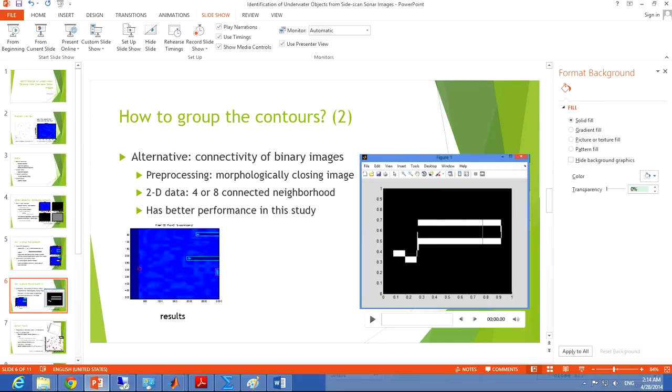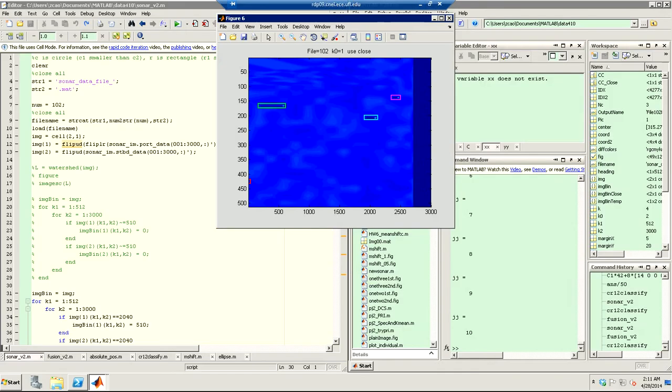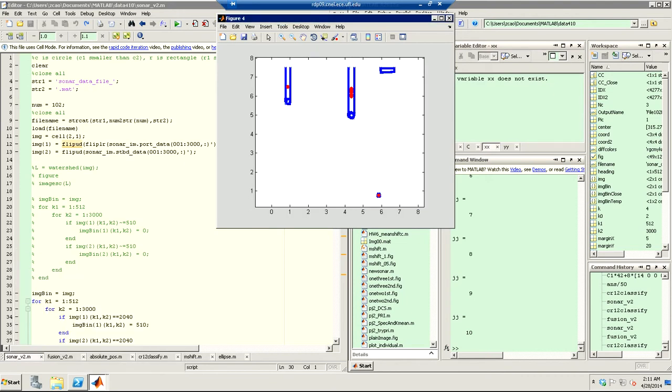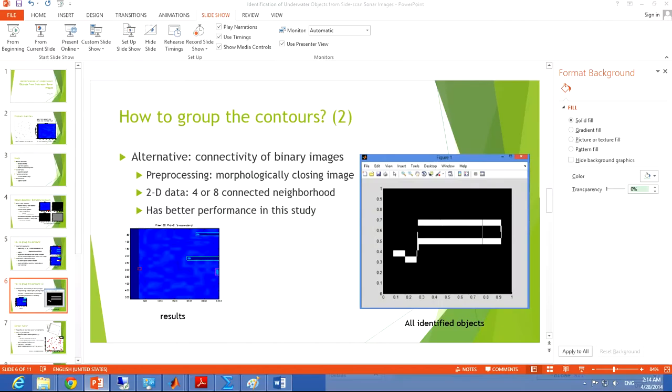One pre-processing necessary here is to morphologically close the image. Because some contours are not strictly connected. Like this one. We need to close it using the MATLAB command imclose. And we see that the result is improved.